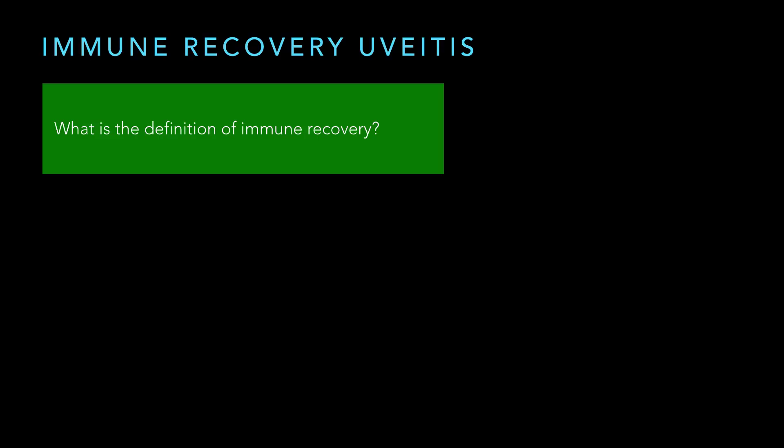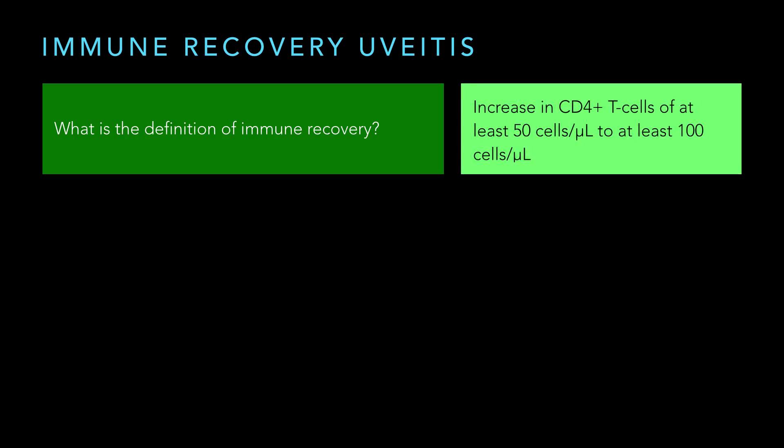I want to talk about immune recovery uveitis. I put this lecture together as a series of questions. So Aaron, before we get to the uveitis portion, have you ever heard of the term immune recovery? Do you know it actually has a definition? I believe it is CD4 counts that were depressed and then increase above 200 — specifically, they have been below 50 and then increase. So basically, we're talking about people with AIDS-defining illnesses whose CD4 is below 200, but then they recover at least 50 cells per microliter and hit an absolute minimum of 100.